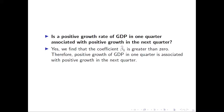The first question is: is a positive growth rate of GDP in one quarter associated with positive growth in the next quarter? To answer this, we look at the coefficient for the slope and whether it is greater than zero. We saw a t-value of 0.34 divided by 0.08, which is about 6, meaning the slope is indeed greater than zero. So positive growth of GDP in one quarter is associated with positive growth in the next quarter.